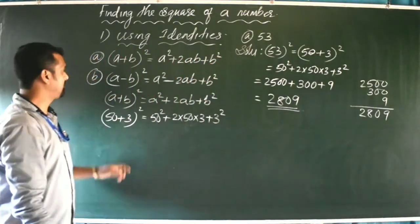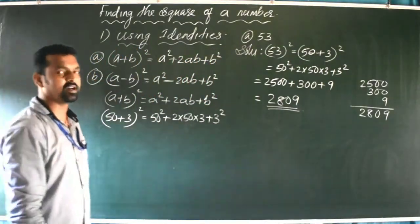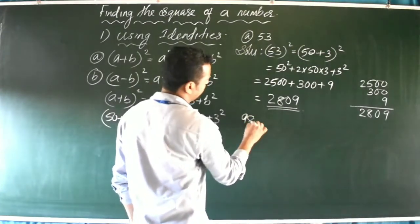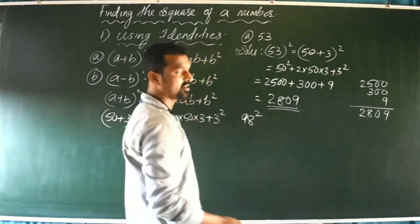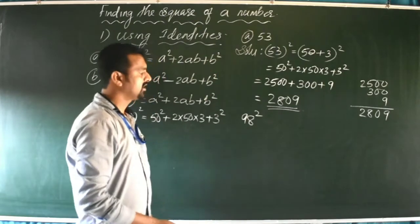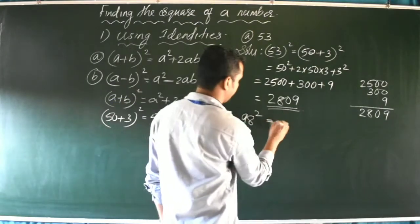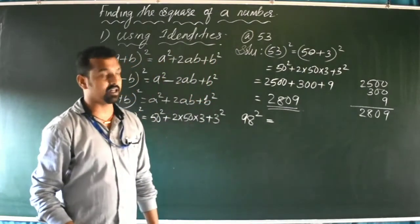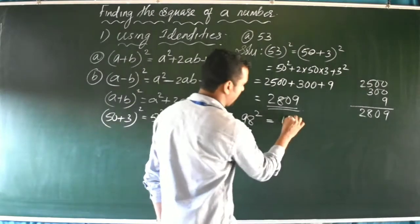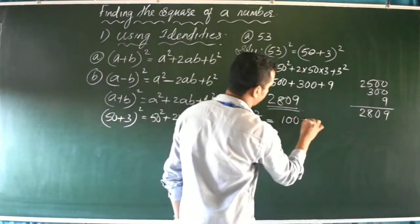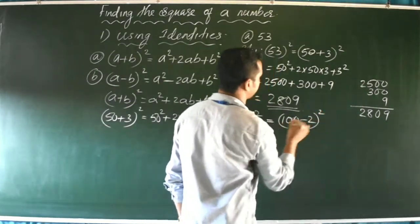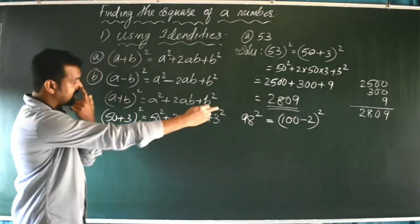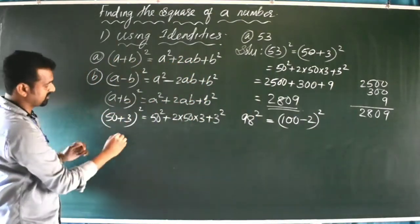Now, how can we use the (a - b)² formula? If the question is to find the square of 98, we can write 98 as 100 - 2. Now it is of the form (a - b)², where a = 100 and b = 2.